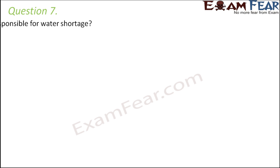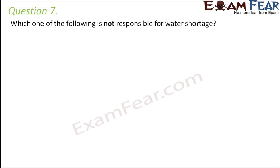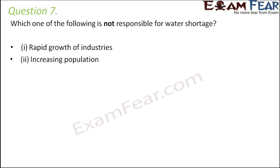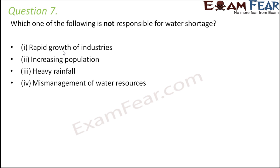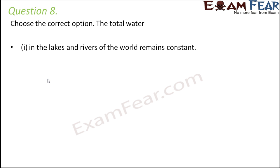Question number 7: Which one of the following is not responsible for water shortage? Rapid growth of industries causes water shortage, and increasing population causes water shortage due to increasing demand. However, heavy rainfall does not cause water shortage — instead, it refills groundwater and increases water supply, so heavy rainfall is not responsible for water shortage.